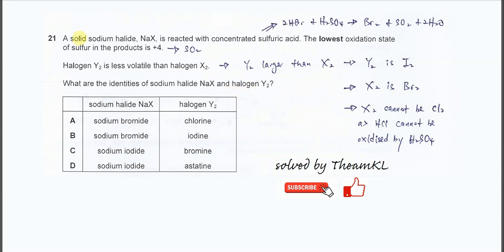Question 21. A solid sodium halide reacts with concentrated sulfuric acid. After reaction, the lowest oxidation state of sulfur in the product is +4. This tells us that SO₂ is formed, because oxygen is -2 and sulfur is +4. So this means there will be a redox reaction between this H₂SO₄ and NaX.